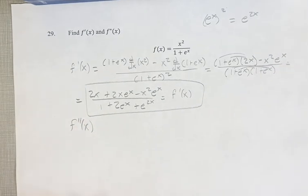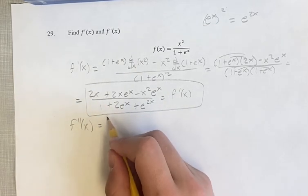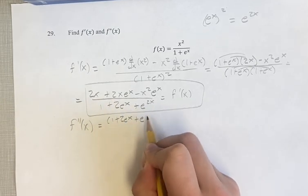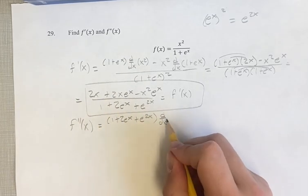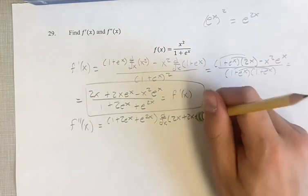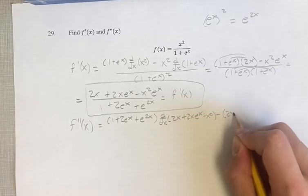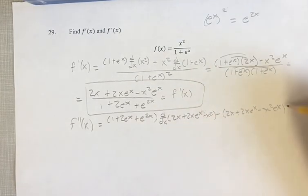For the second derivative, we are going to use the quotient rule again, which is going to be the denominator times the derivative of the numerator, minus the numerator times the derivative of the denominator, over the denominator squared.